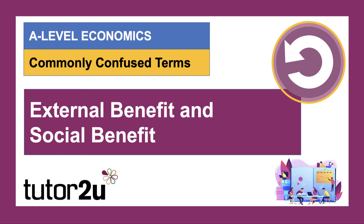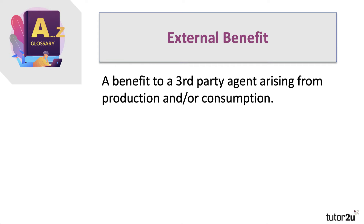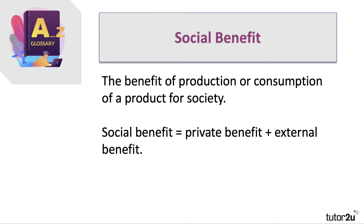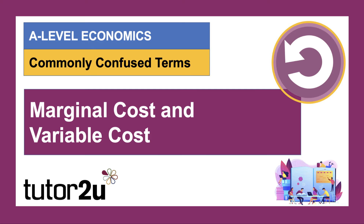What about external benefit and social benefit? Similar here — again, they are confused. External benefit is a benefit to a third party agent arising from production and/or consumption. Positive externalities lead to external benefits which benefit other people. Social benefit includes the private benefit plus the external benefit. A lot of people confuse social with external — social includes the external cost or benefit plus the private cost or benefit.